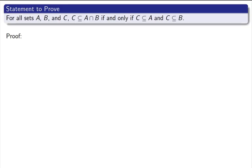Here's our first example. For all sets A, B, and C, C is a subset of A intersect B if and only if C is a subset of A and C is a subset of B. Let's start off by claiming our sets. Let A, B, and C be sets. Again, we're picking these sets arbitrarily.